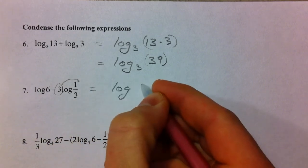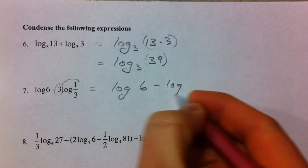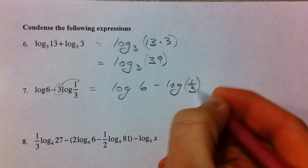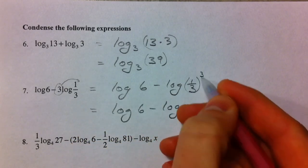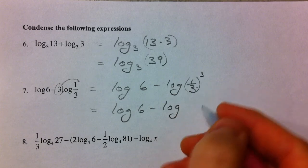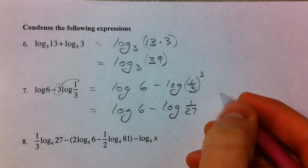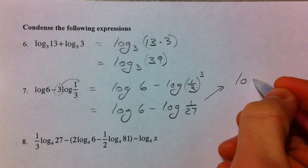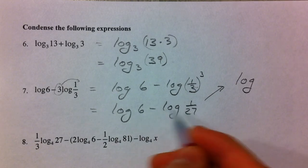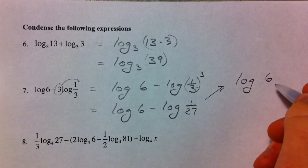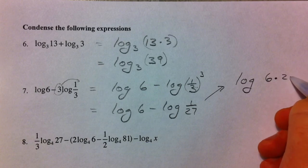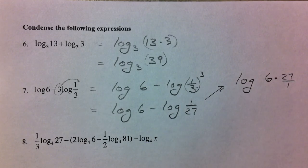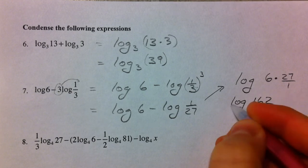Now, we've got this 3 that can be raised to that power. And, so, we've got log base 6 minus log of 1 third raised to the 3. So, we have log base 6 minus log of 1 third times 1 third times 1 third is 1 27th. And, so, that's going to simplify into 1 log. If there are 2 separate logs subtracted, it's 1 log that's divided. So, 6 divided by 1 27th. 6 divided by 1 27th is the same as 6 times 27 over 1. And, so, 27 times 6 is log of 162.